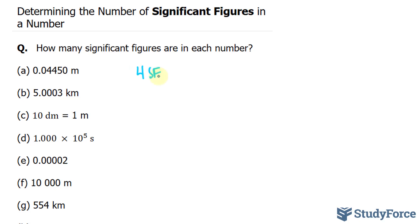In question B, we have 5 significant figures, 1, 2, 3, 4, 5. Notice that these three zeros are sandwiched in between the 5 and the 3. That means they're significant as well. So here we'll write down 5, 5 significant figures.